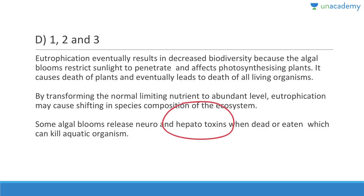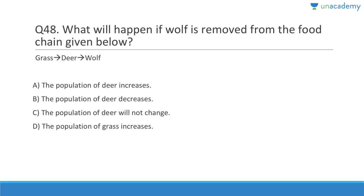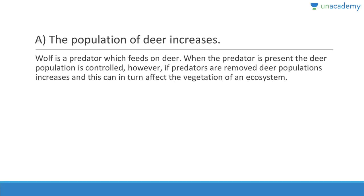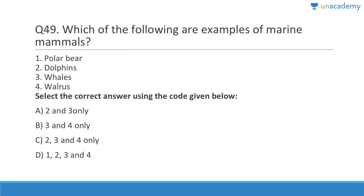Question forty-eight: What will happen if the wolf is removed from the food chain? The population of deer will obviously increase. The wolf is a predator that feeds on deer; when the predator is present the deer population is controlled. If you remove the wolf, the deer population will increase and may decrease the population of vegetation.